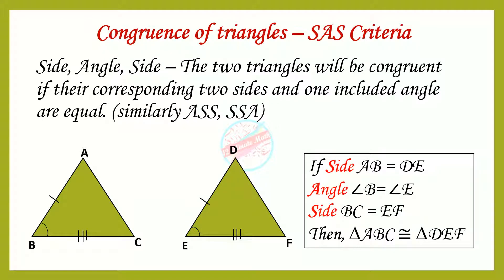The second criteria is SAS — Side, Angle, Side criteria. The two triangles will be congruent if their corresponding two sides and one included angle are equal. Here we can see side AB is equal to side DE, angle B is equal to angle E, and side BC is equal to side EF. Therefore, the two triangles are congruent.